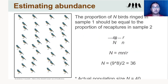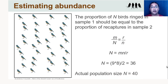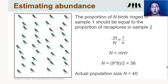The assumption is that when you release the ringed birds back into the population and resample, the proportion of marked birds in the population should equal the proportion of recaptures in sample two. Therefore: M/N = r/n, so N = Mn/r. In our example: N = 9 × 8 / 2 = 36. The actual population of birds is 40, so this gives a close estimate. This is a brief introduction to how estimating abundance is possible using marked individuals in capture-mark-recapture.